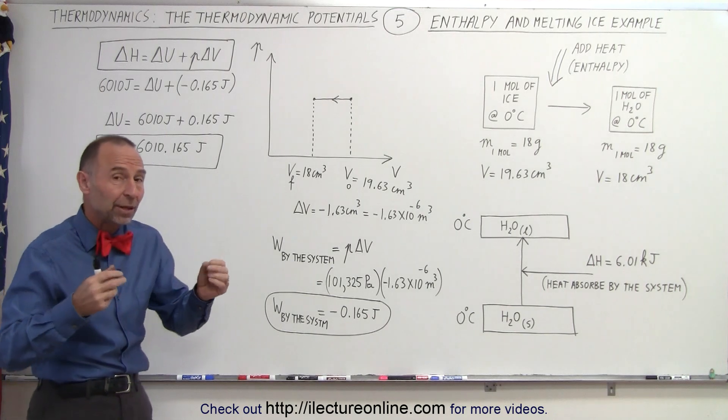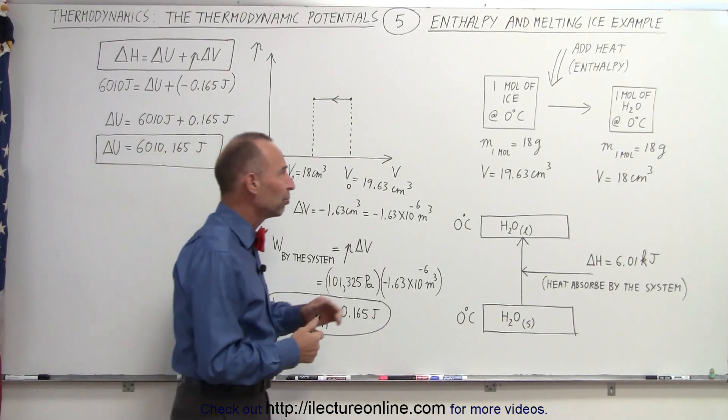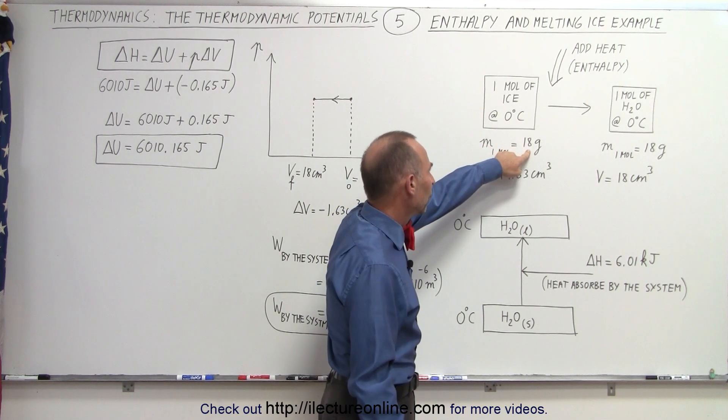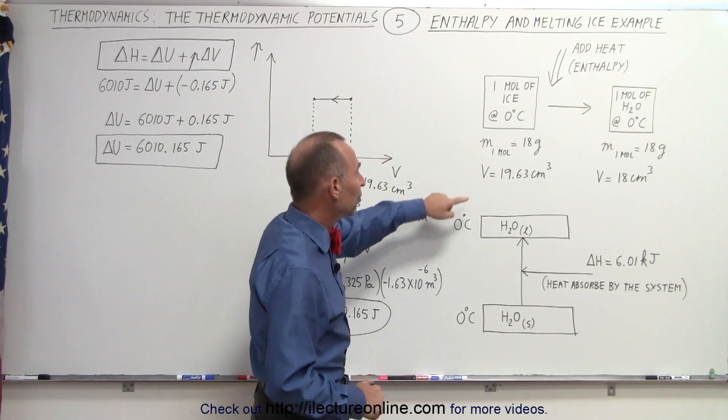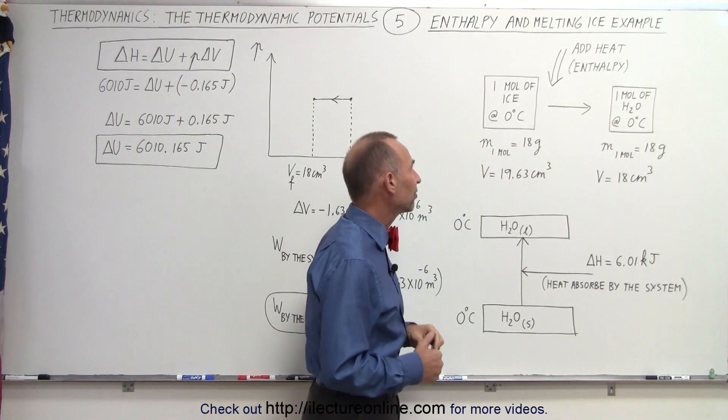And let's apply it to a concept that we're all familiar with, the melting of ice. So let's say we have a small cube of ice that contains 18 grams of ice, so that's about one mole. One mole of ice is about 18 grams, which then means that it takes up a volume of about 19.63 cubic centimeters.